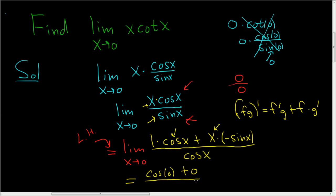And on the bottom, you get cosine 0, so you get 1 plus 0 over 1. Cosine of 0 is 1, and so we end up with 1. So kind of a neat problem. I hope this helps.